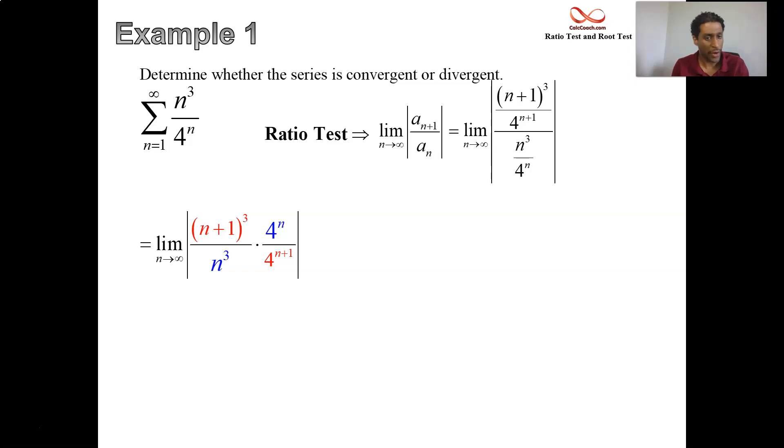The action that we should take next is algebraic. We should take this 4 to the n plus 1 and break it apart. The exponent 4 to the n plus 1 should be broken apart as 4 to the n times 4. Why would we do that? So that we can cancel with the 4 to the n that's in the numerator. What about this other guy? n plus 1 quantity cubed on top of n cubed. What happens as n goes to infinity on that?